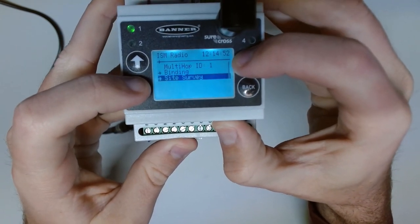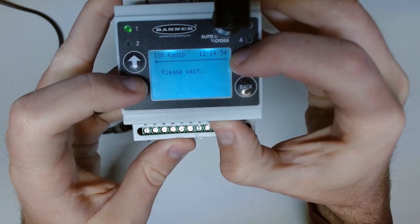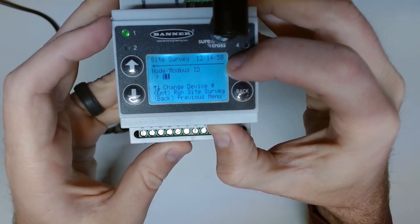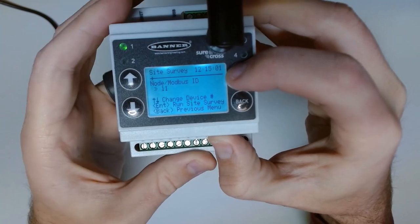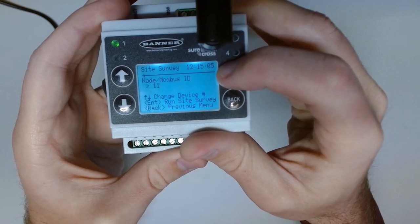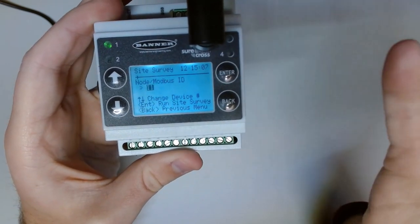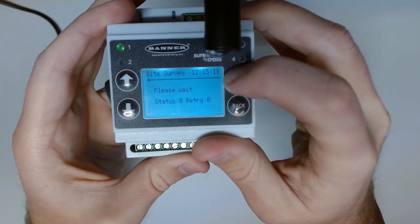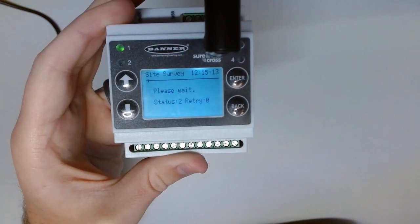This time, instead of binding, we go to site survey. Once we get in here, we pick that same ID that we just bound the device to or whatever one you ultimately bound to. If you've got multiple on here, you can do many of them through this screen one at a time. And we hit enter on that, and now we will sit here and wait.